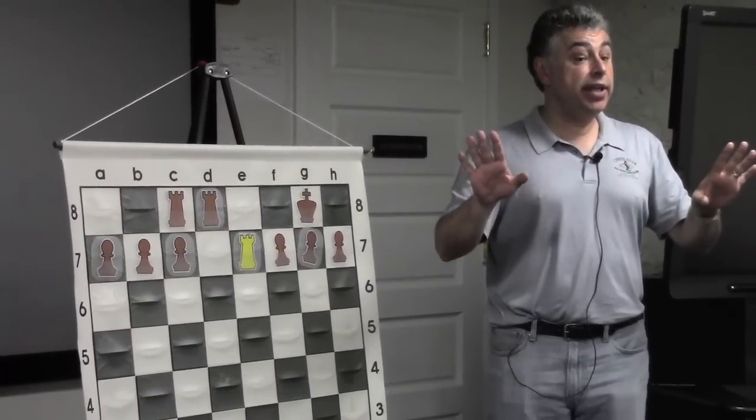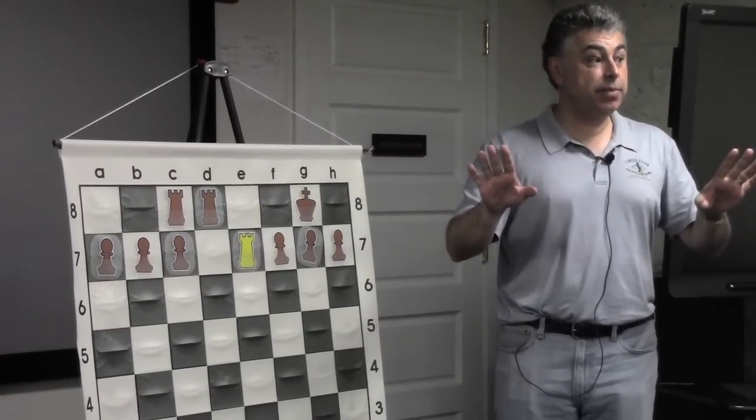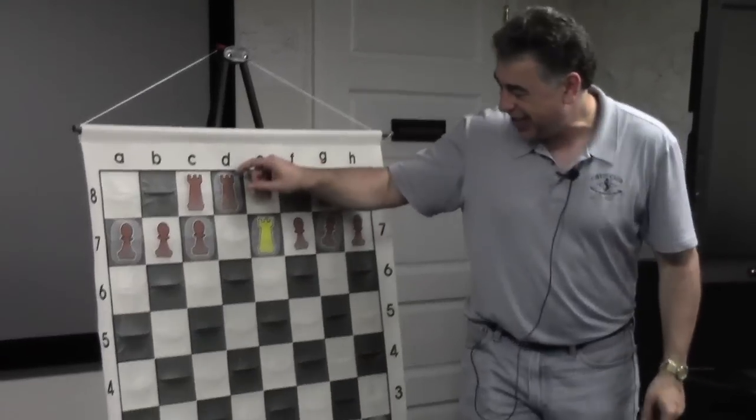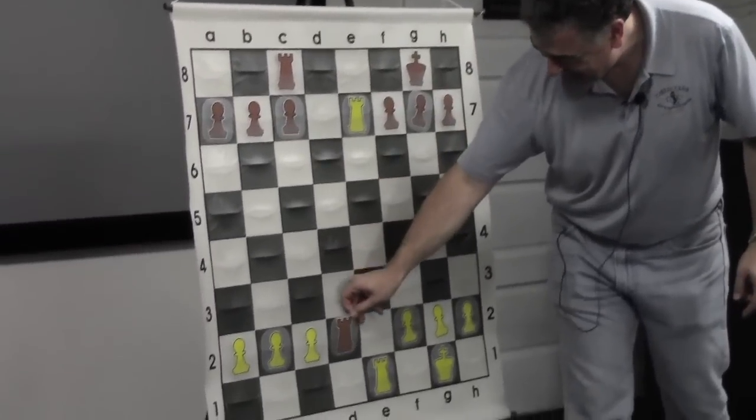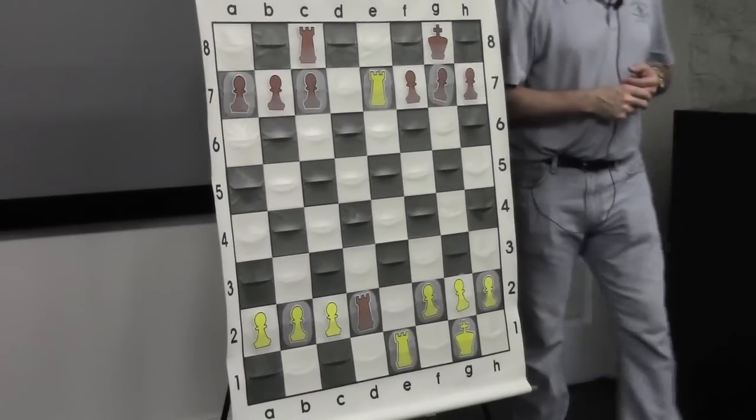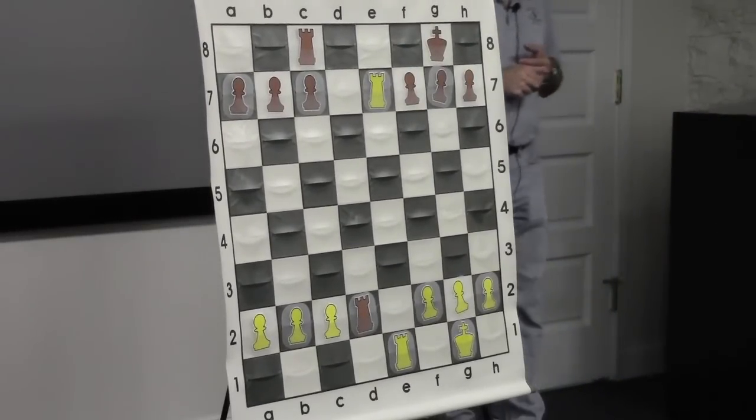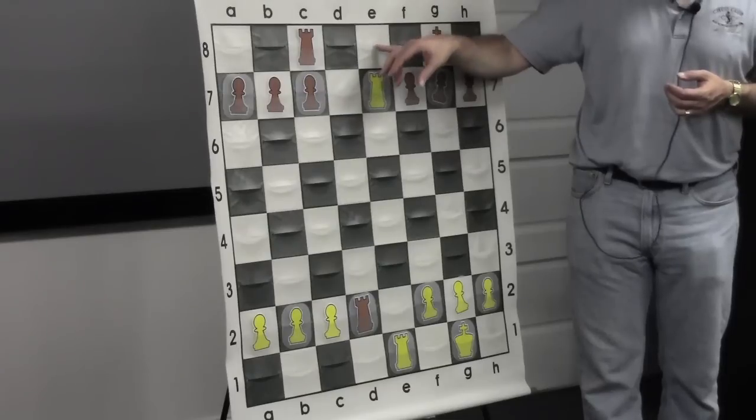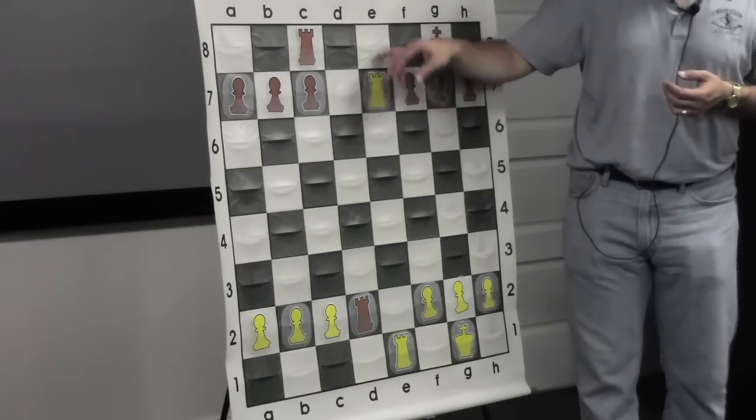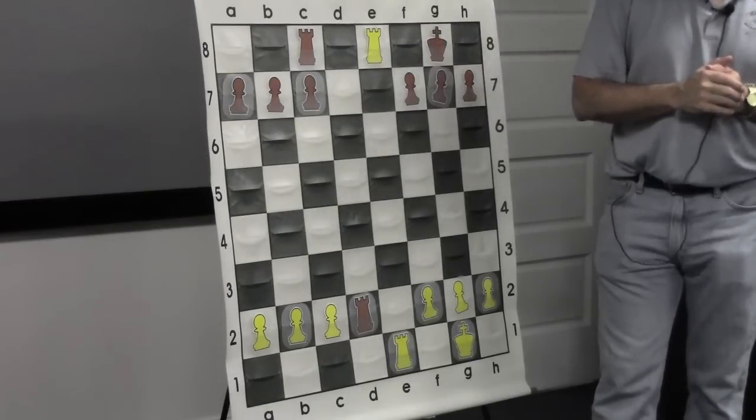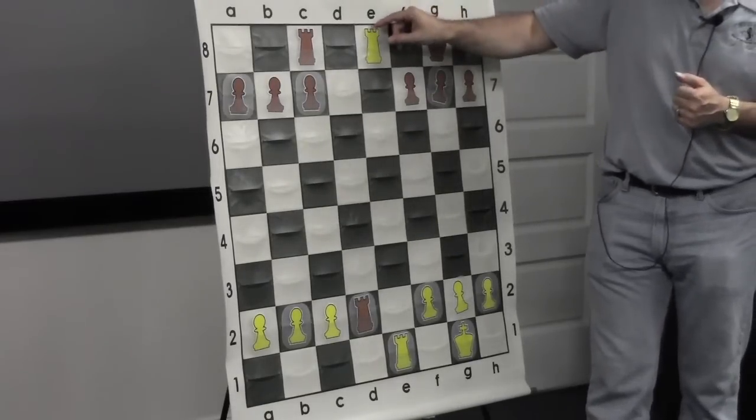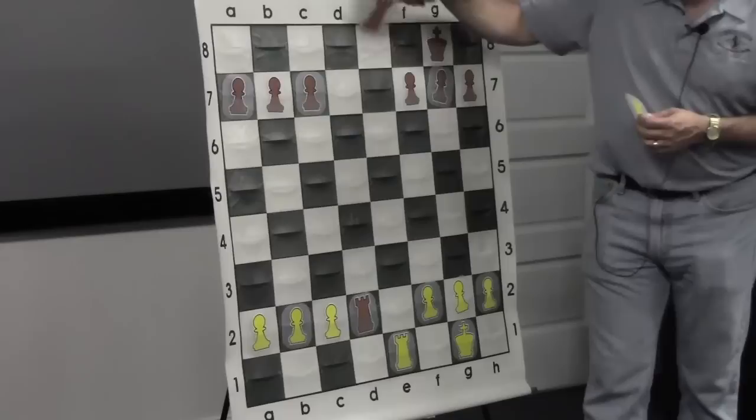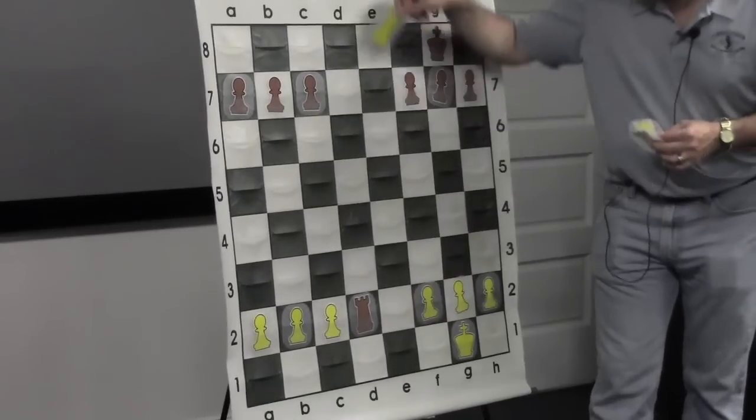Black, instead of making Luft, makes a terrible decision. A suicide decision. He moves his rook. Rook e8 check. That is the best move. Rook e8 check, checkmate. Because after rook e8 check, it's checkmate in one turn. After the rooks are traded, checkmate.